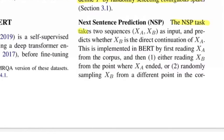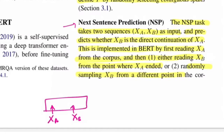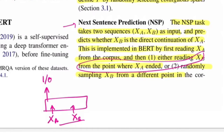Regarding NSP (next sentence prediction), the task takes two sequences XA and XB as input and predicts whether XB is the direct continuation of XA. This is implemented in BERT by reading XA from the corpus, then either reading XB from where XA ended or randomly sampling XB from a different point — creating positive and negative samples respectively.